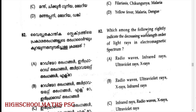Which of the following rightly indicates the decreasing wavelength order of light rays in the electromagnetic spectrum? Answer: Option A — Radio waves, Infrared rays, Ultraviolet rays, and X-rays in decreasing wavelength order.